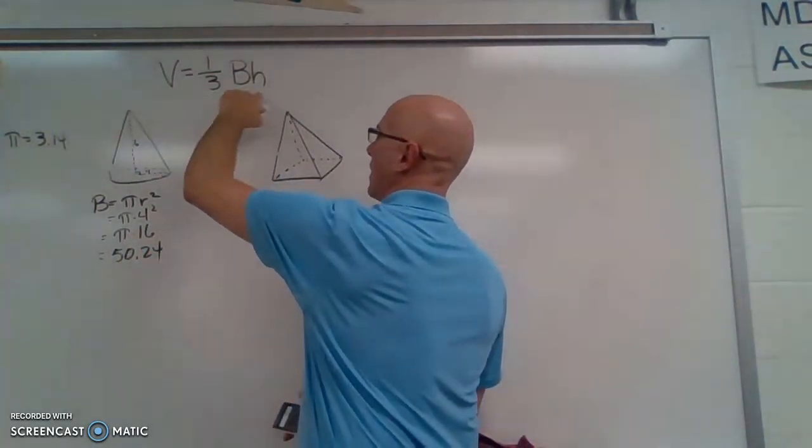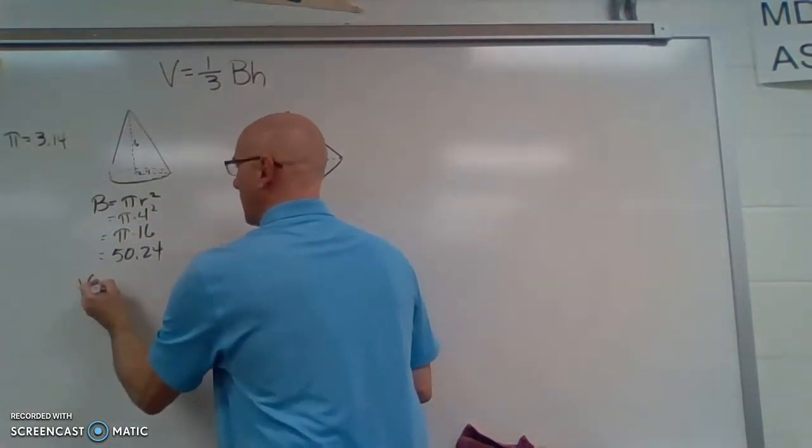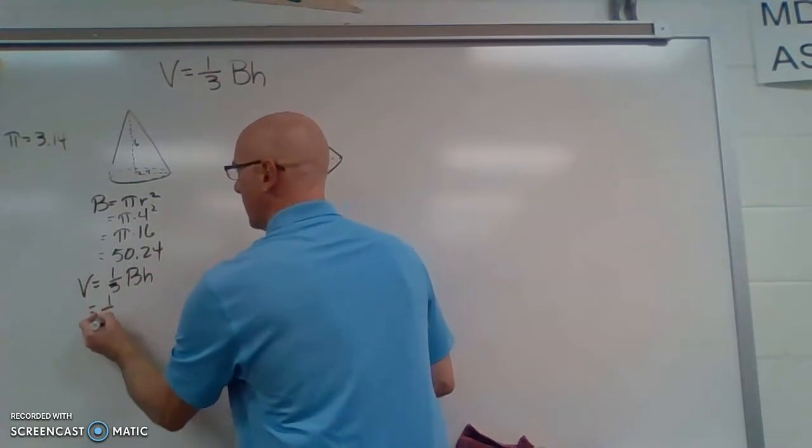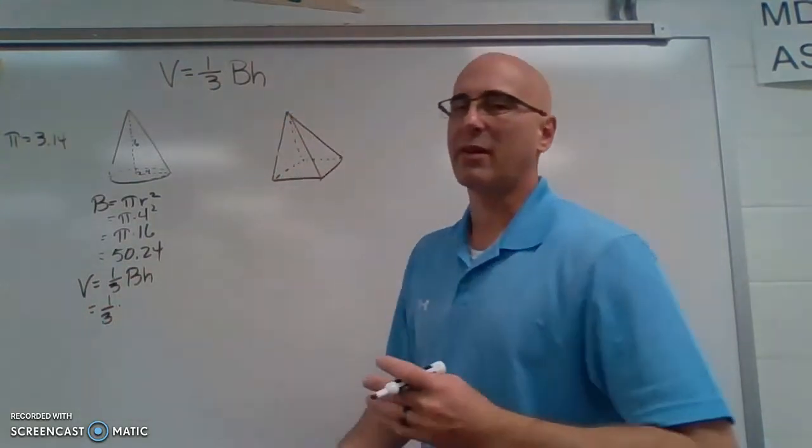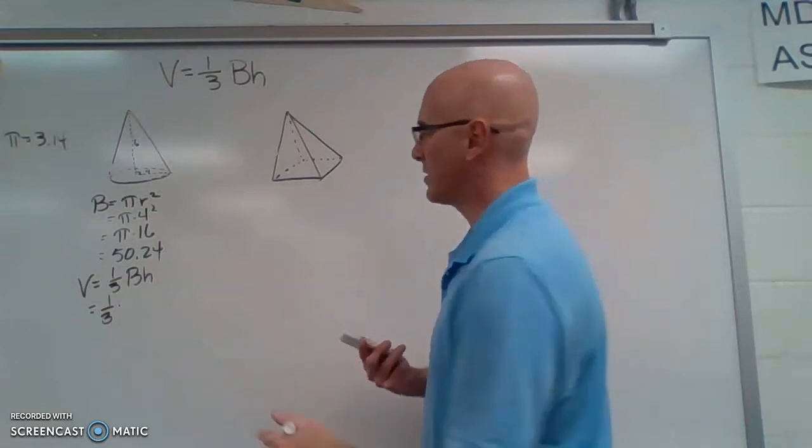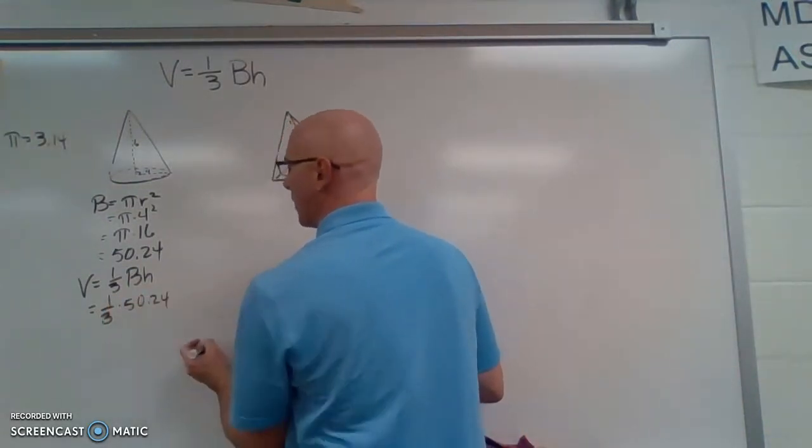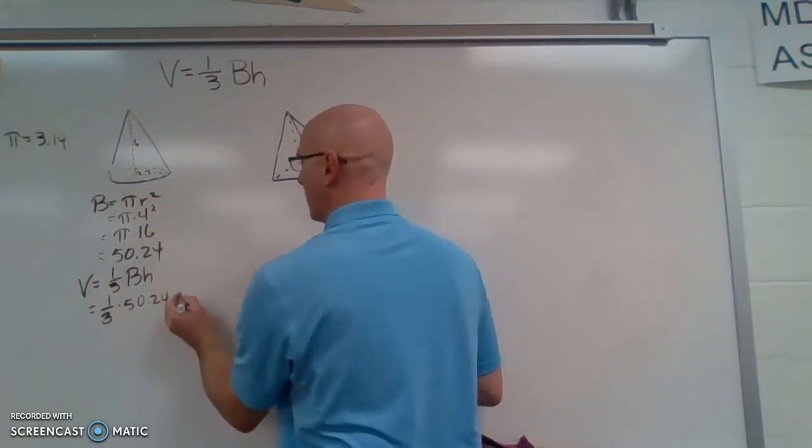Now we are going to use our formula for volume. Volume is one-third base times height. So here you can see we are going to be needing our calculator for this. So our base is 50.24 times the height of six.